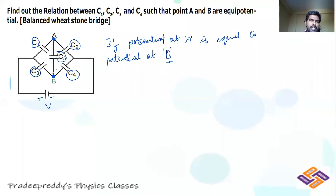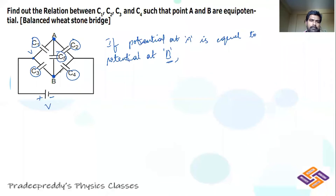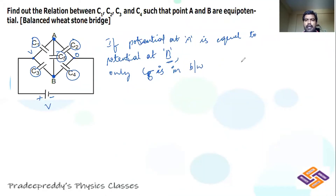If potential at A equals potential at B: between A and B there is only one capacitor connected, that is C5. C1 is connected between V and A, C3 between V and B, C4 between B and 0, and C2 between A and 0. Only C5 is between A and B. Since potential at A equals potential at B, delta V is equal to zero.